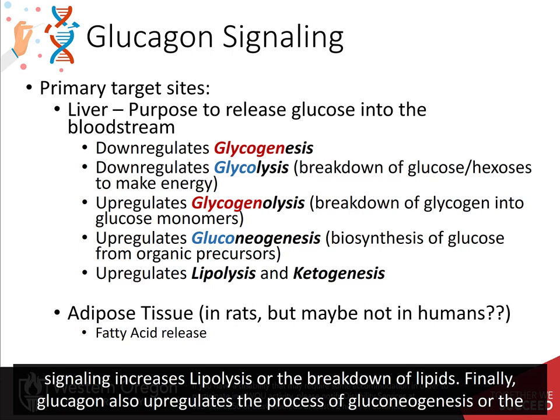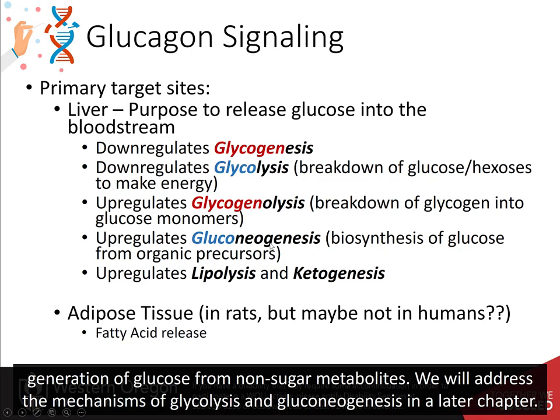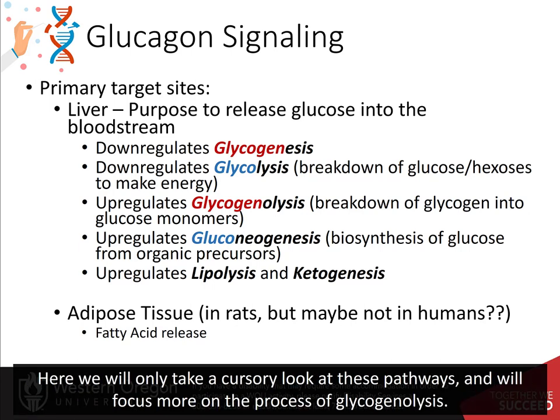Finally, glucagon also upregulates the process of gluconeogenesis, or the generation of glucose from non-sugar metabolites. We will address the mechanisms of glycolysis and gluconeogenesis in later chapters. Here, we will only take a cursory look at these pathways and will focus more on the process of glycogenolysis.